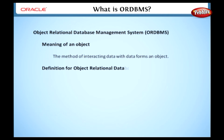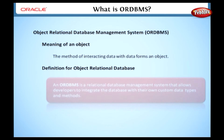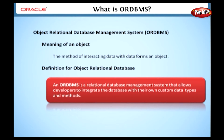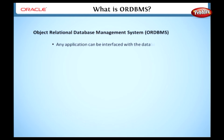Let's see the definition of Object Relational Database. An Object Relational Database, ORD, or Object Relational Database Management System, ORDBMS, is a relational database management system that allows developers to integrate the database with their own custom data types and methods. In this type, any application can be interfaced with the database, and the data is stored as an object in this database.